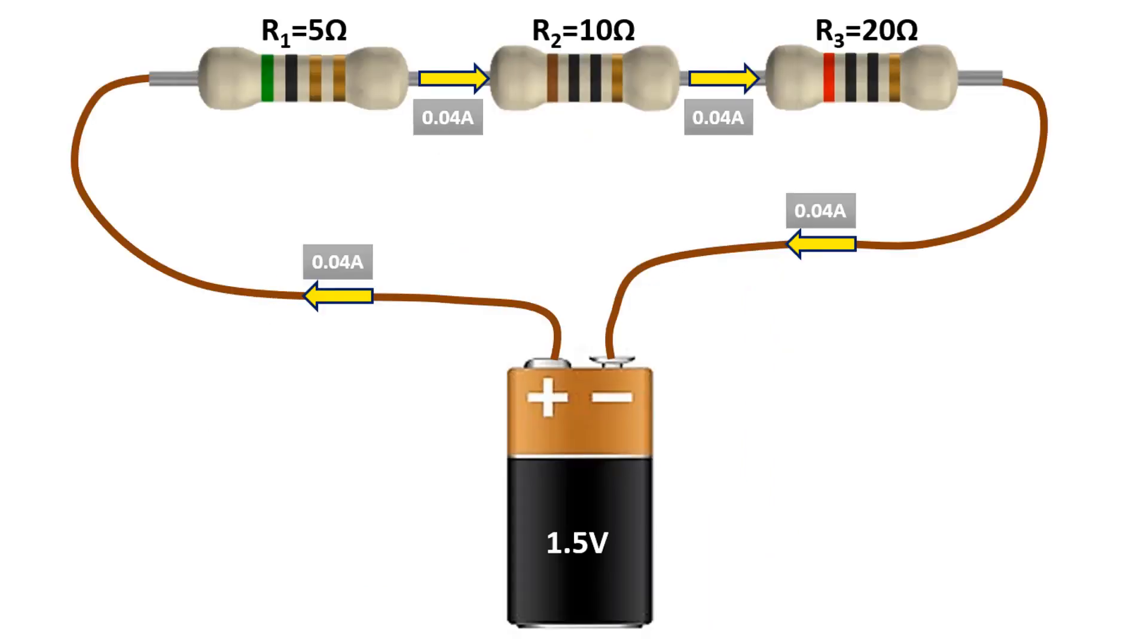In series connected circuits, the same current flows through all circuit elements. We must not forget this. Because there is only one path for the current to flow, and this current has to be the same at every point.